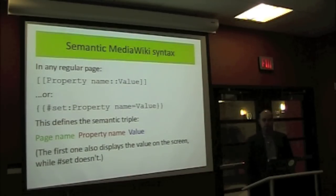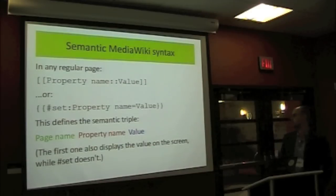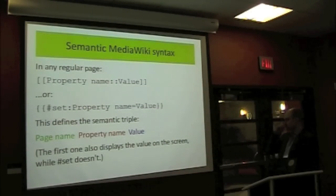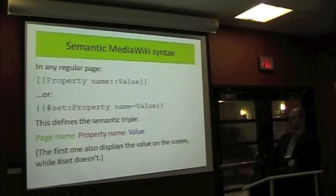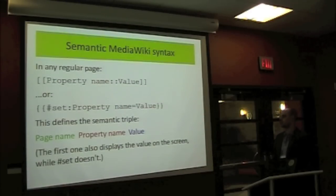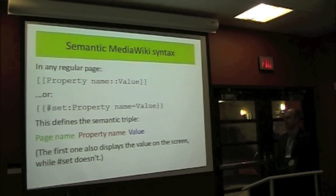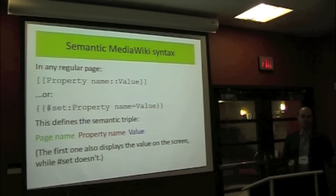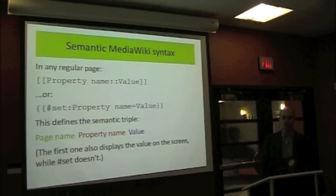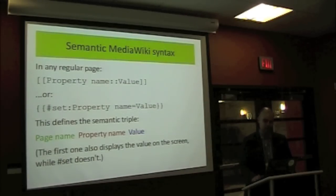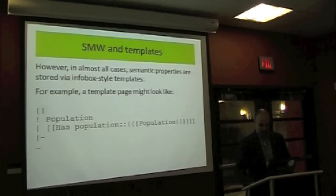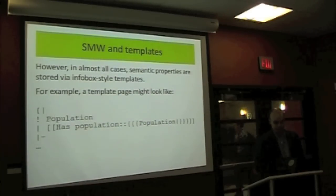What is Semantic MediaWiki all about? At its heart, it provides two tags for storing properties and values: you say property name::value, or use 'set' with the same idea. That defines a semantic triple where the first element is the name of the page you're on. The difference between the two is that the first one also displays the value on screen, while 'set' does a silent annotation without displaying anything.